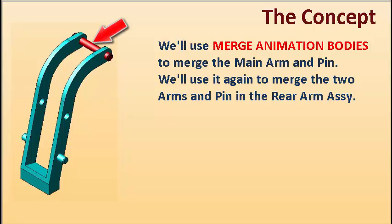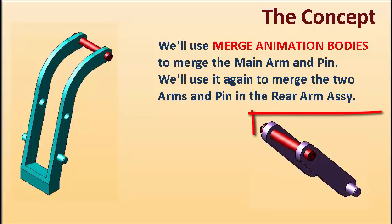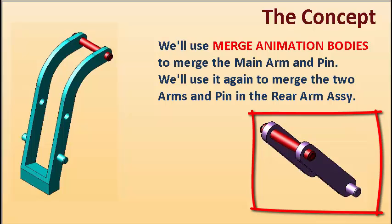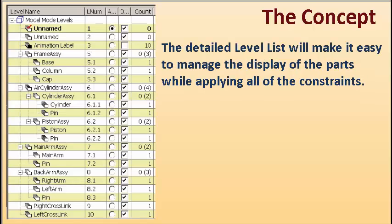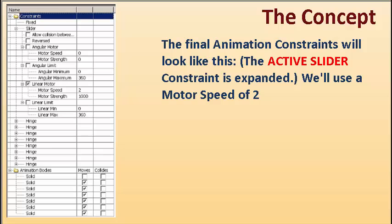We'll use merge animation bodies to merge the main arm and pin. We'll use it again to merge the two arms and pin in the rear arm assembly. We'll then apply passive hinge constraints to all of the pivot points on the mechanism. The detailed level list will make it easy to manage the display of the parts while applying all of the constraints.